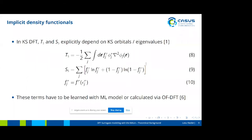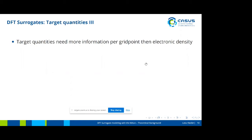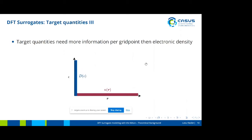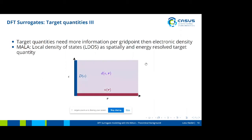Therefore, the idea behind MALA is to use a different intermediate quantity that is directly outputted from a machine learning workflow, holding more information per grid point than the electronic density, in order to enable us to analytically evaluate the total energy. If we think of the density as a vector on the real-space grid — one value per point — we could add another dimension, such as the energy on which the DOS is defined. That leads to the local density of states, the LDOS, as a spatially and energy-resolved target quantity used in MALA.